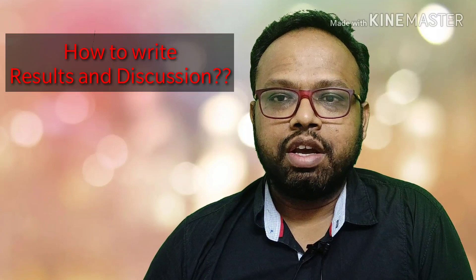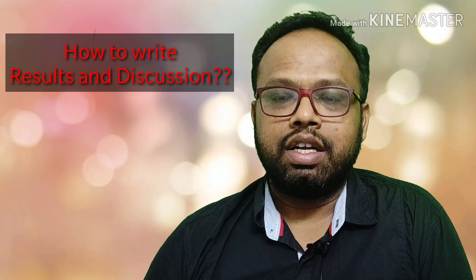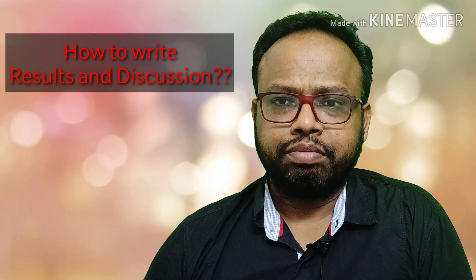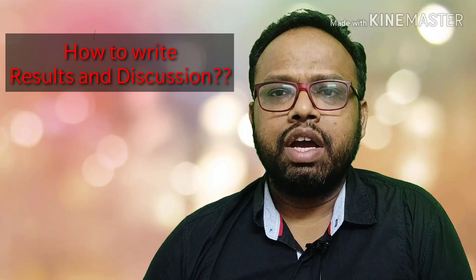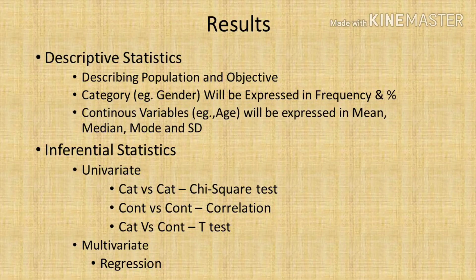In results, we have to divide the results into two parts: descriptive statistics and inferential statistics. Descriptive statistics is used to describe our population and our primary and secondary objectives. You have to describe based on the outcomes, and we use them on the basis of the type of variable.